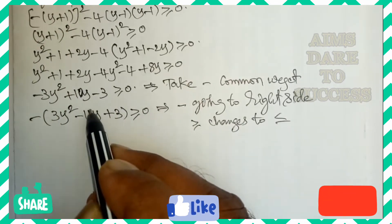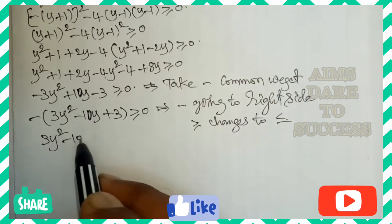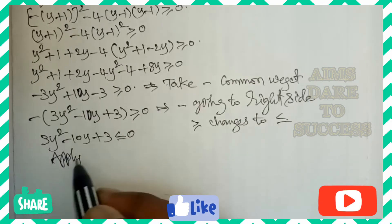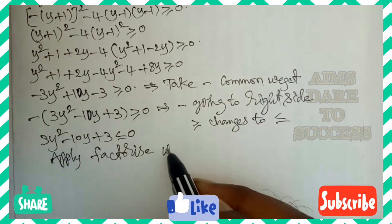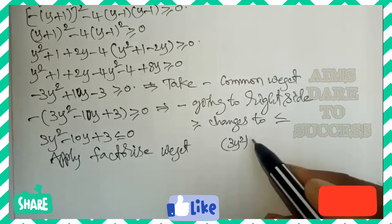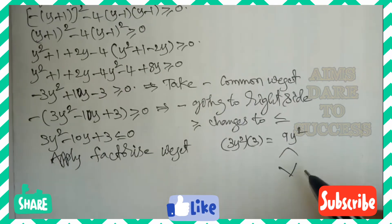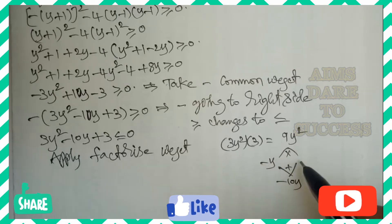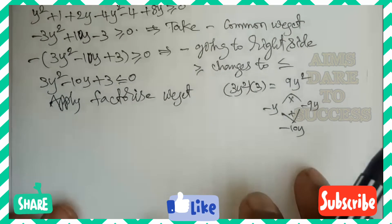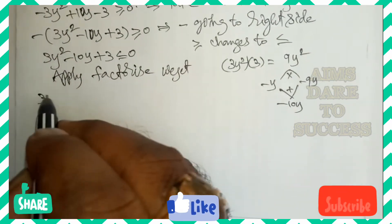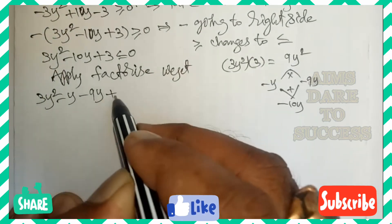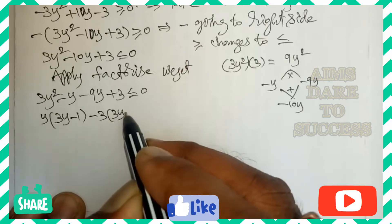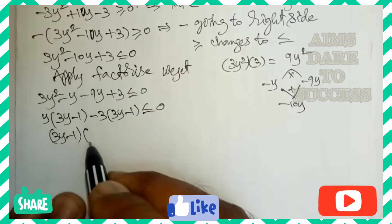Now factorizing 3y² - 10y + 3: multiply first and last coefficients: 3 × 3 = 9y². We need two terms that add to -10y and multiply to 9y² — these are -y and -9y. So: 3y² - y - 9y + 3 ≤ 0. Taking y common from first pair: y(3y - 1), and -3 common from second: -3(3y - 1), giving (3y - 1)(y - 3) ≤ 0.